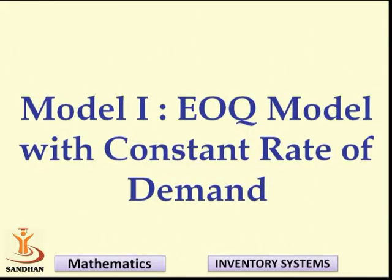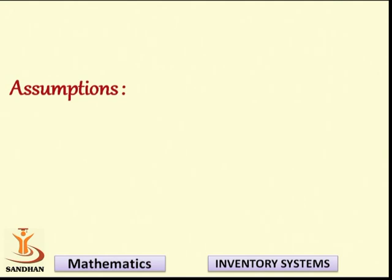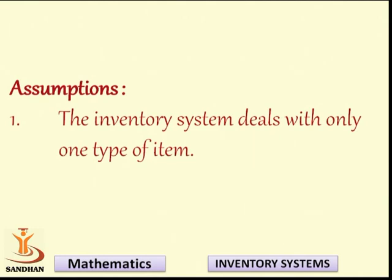Let us now look at the first or basic model — the EOQ model with constant rate of demand. This model assumes a constant demand within a cycle. We make certain assumptions of ideal conditions, and under these conditions we find the quantity that minimizes the average total inventory cost. This is Model 1.